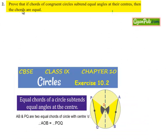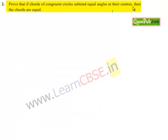Moving on to question number 2: prove that if chords of congruent circles subtend equal angles at their centers, then the chords are equal.